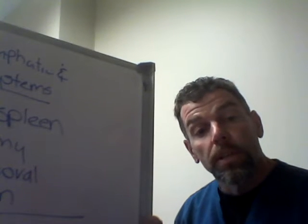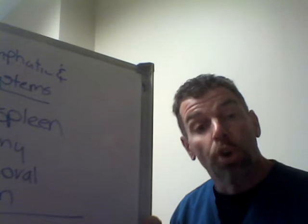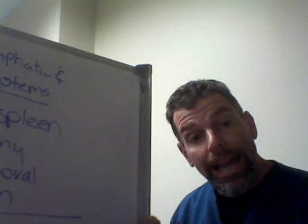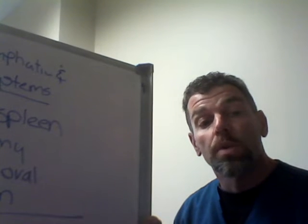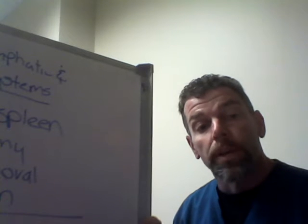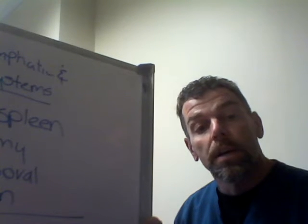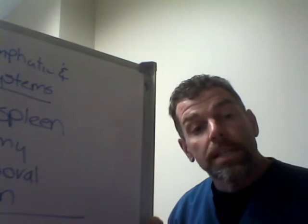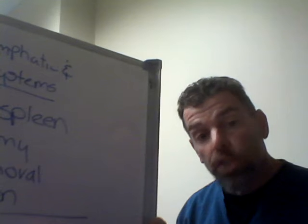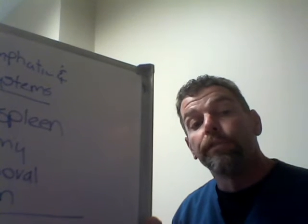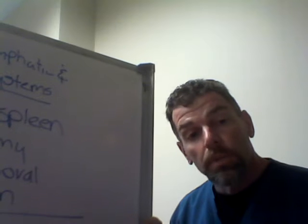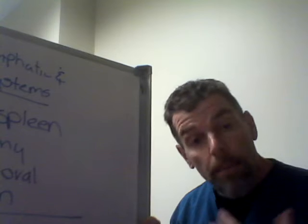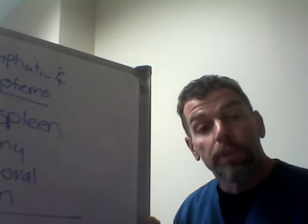Something interesting about the thymus gland: it's actually at its largest during our early formative years, and then as we age towards adulthood, it actually gets smaller — it may not even show up on scans as a person reaches maturity. This is significant because if somebody isn't exposed to a lot of pathogens early in their lifespan, then as an adult, if they get exposed to a great number of pathogens, they won't have the immune function of somebody who was out and about, exposed to many different pathogens, and built up a great immune system in their early formative years.